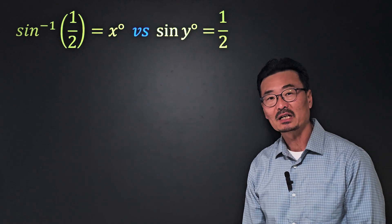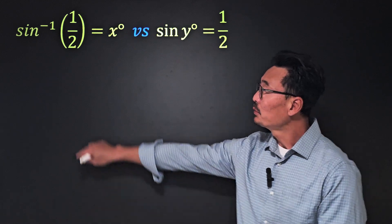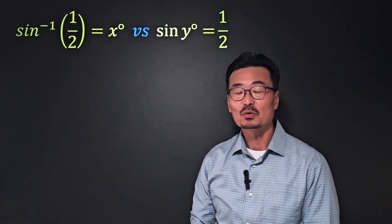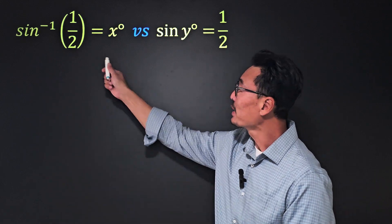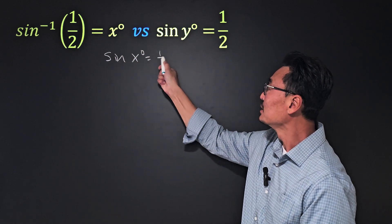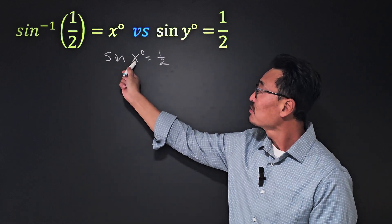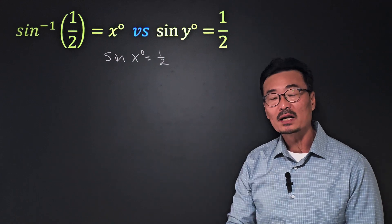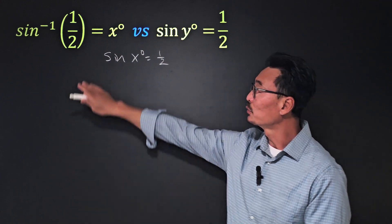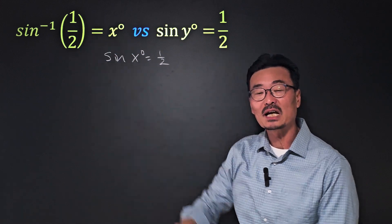Here's a trigonometric concept that confuses a lot of students. When we're given inverse sine of one-half equals x degrees, we could rewrite that as sine of x degrees equals one-half. However, the x value here has to be one and only one value, since the original function, the inverse function, equals x, and the x or the output can only have one value, otherwise it wouldn't be a function.